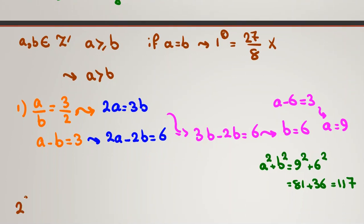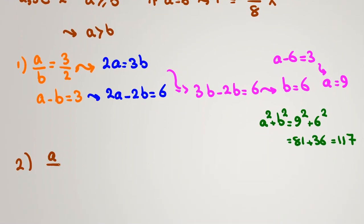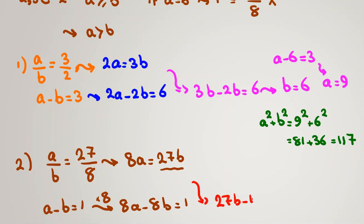Case 2: a over b equals 27 over 8 and a minus b equals 1. Cross-multiplying gives 8a equals 27b. From a minus b equals 1, multiply by 8: 8a minus 8b equals 8. Replacing 8a with 27b: 27b minus 8b equals 8, so 19b equals 8. Wait — 19b equals 1, and since b must be a positive integer, this is impossible. So our only answer is 117.